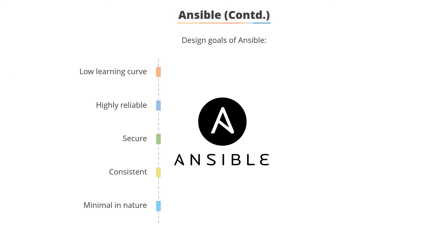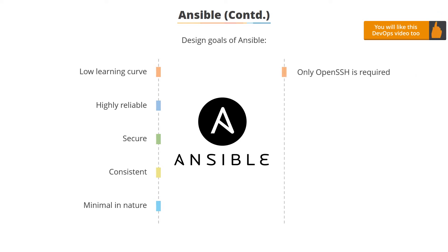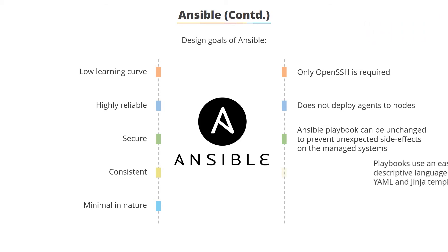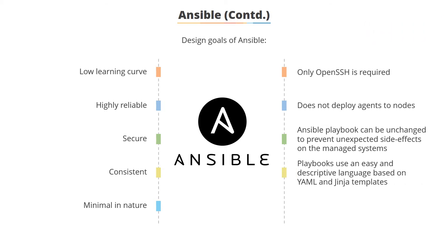It should be easy to learn, with no huge learning curve for a software that manages your configuration. It should use OpenSSH and should not deploy agents to nodes. An Ansible playbook can remain unchanged to prevent unexpected side effects on managed systems. Ansible playbooks use an easy and descriptive language based on YAML and Jinja templates, and the management system should not impose additional dependencies on the environment.